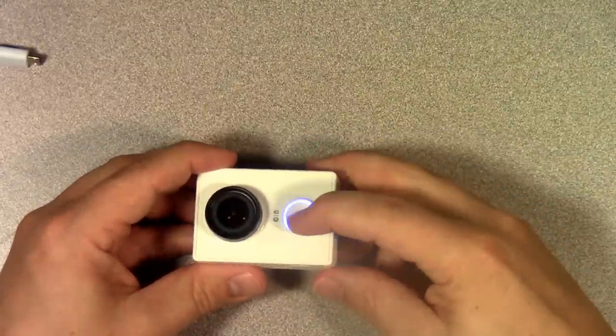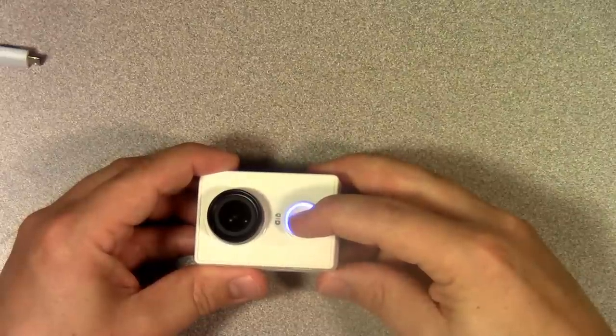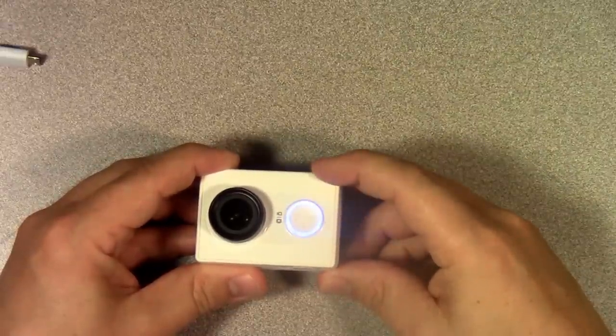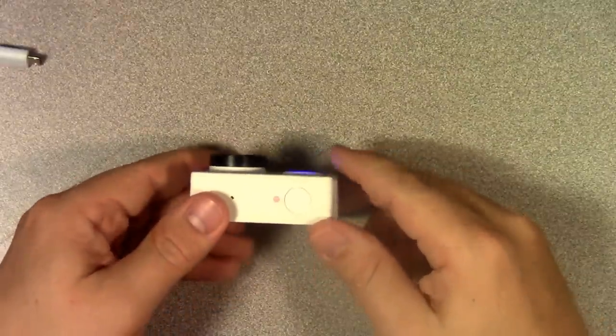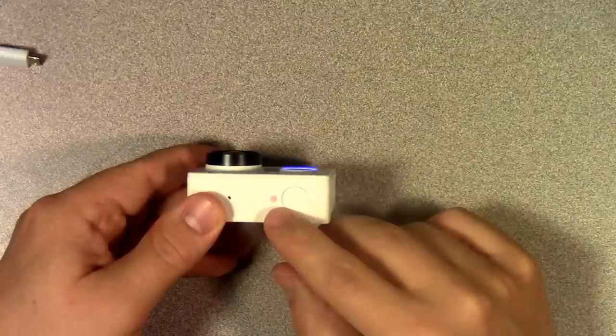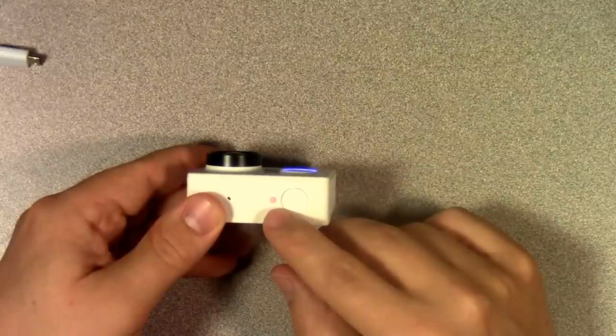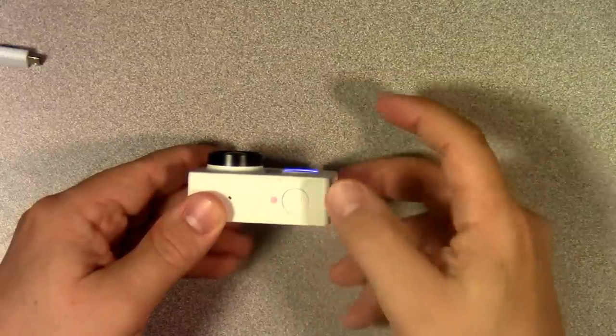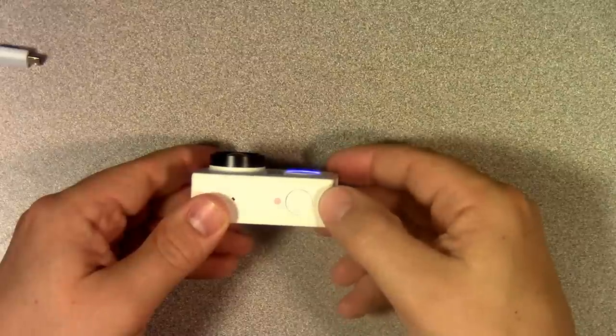Now if you want to take video, you tap this button on the front to change it to video mode. At that point, you notice that the light on the top is solid red and that means it's in video mode and it's in standby mode. It's ready for you to press this button to start recording.